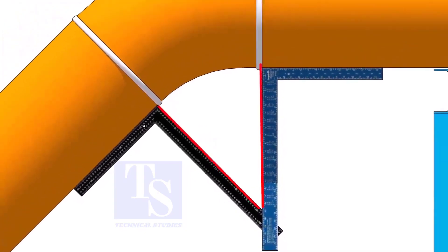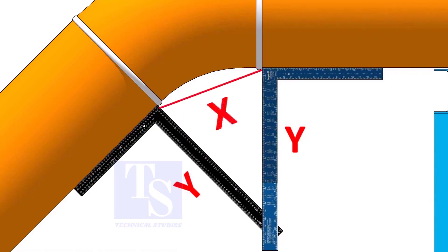Measure the distance from the pipe to the point where the right angles bisect each other. Measure only one side is enough. Now, carefully measure the distance between the corners of the right angles.